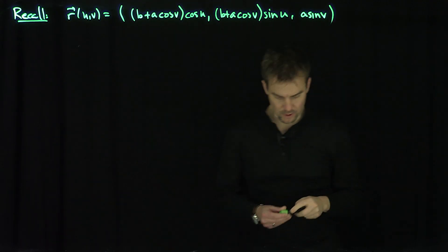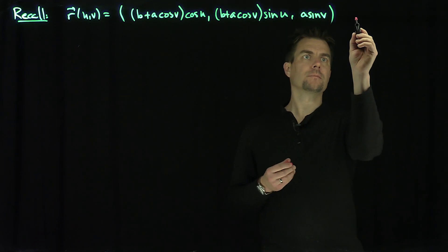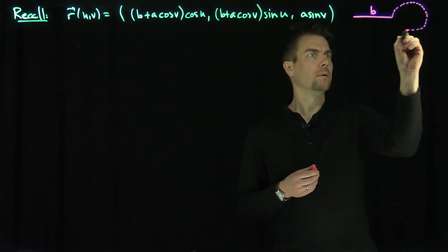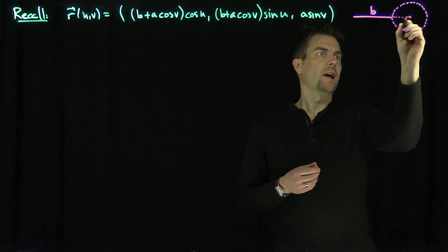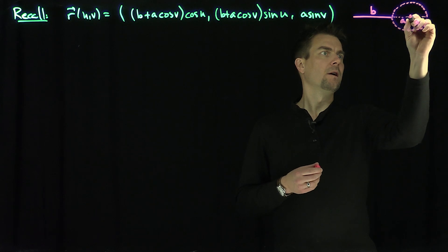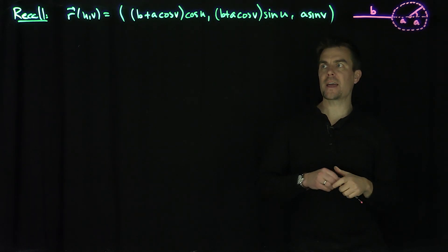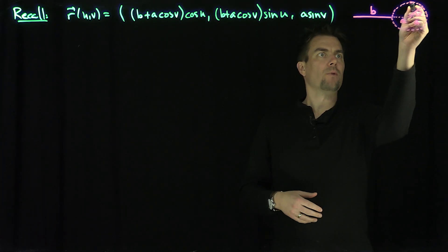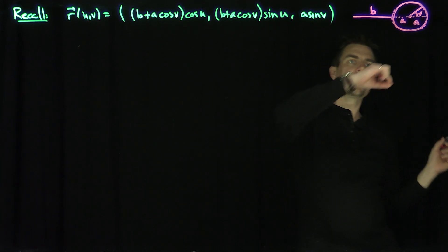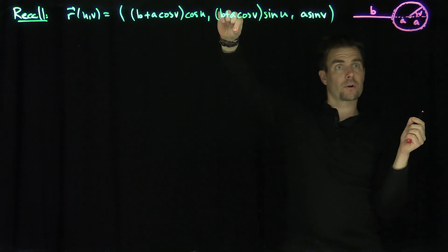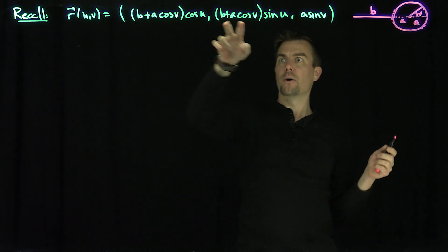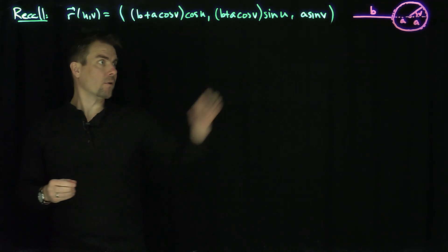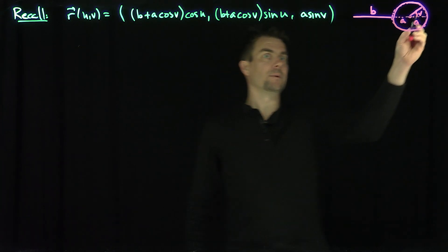What we're doing here is we're taking a fixed length b, and then drawing a circle of radius a. This length over here is a, and we're drawing an angle v, so that corresponds to a length of v. The v angle gives points around the perimeter of this circle, and then I'm going to take that circle and rotate it. That point corresponds to (b + a·cos(v), b + a·sin(v)), rotated around the axis.